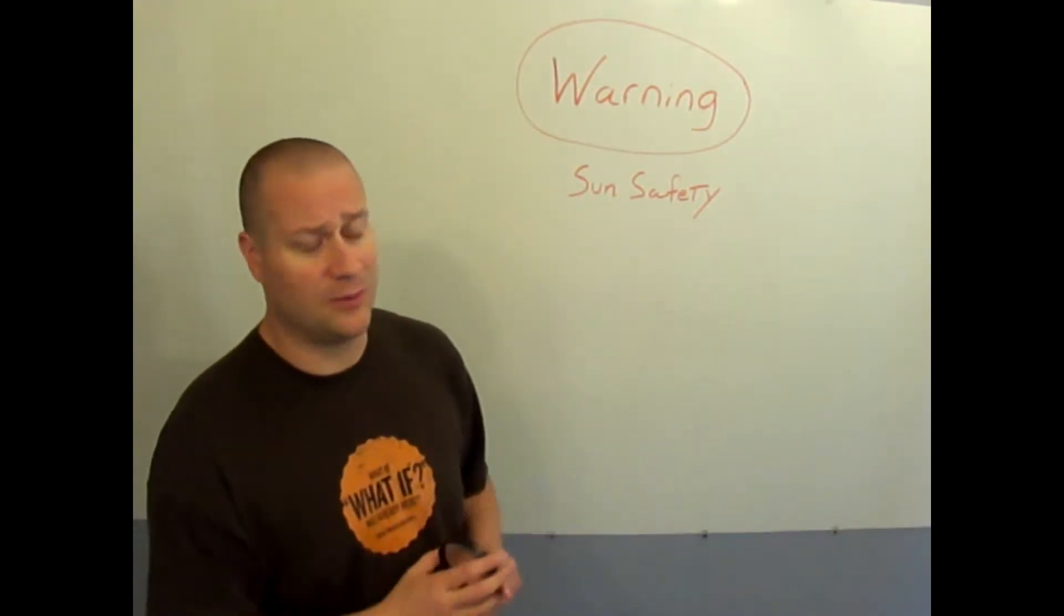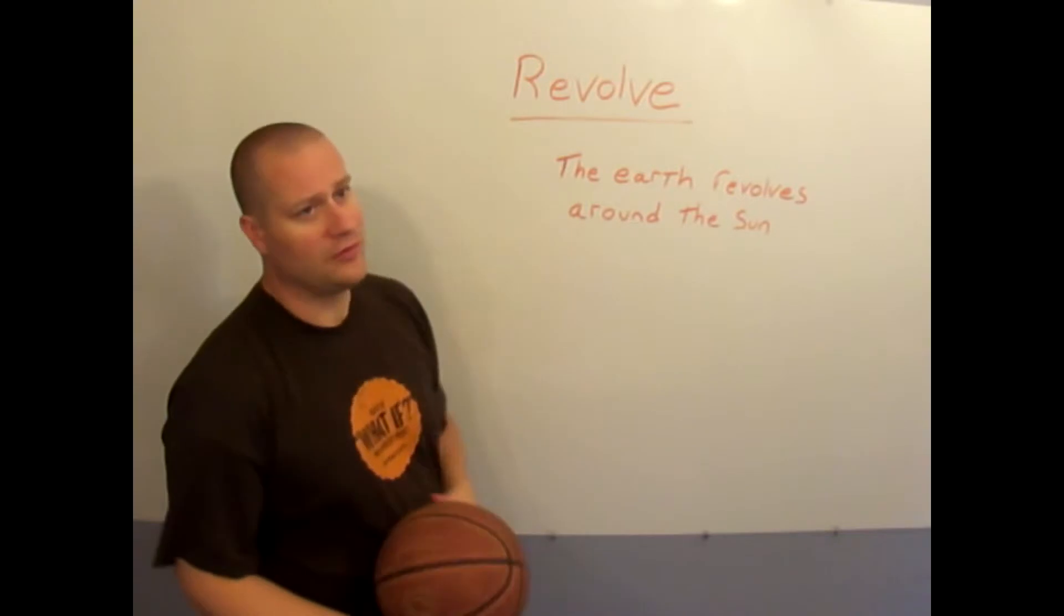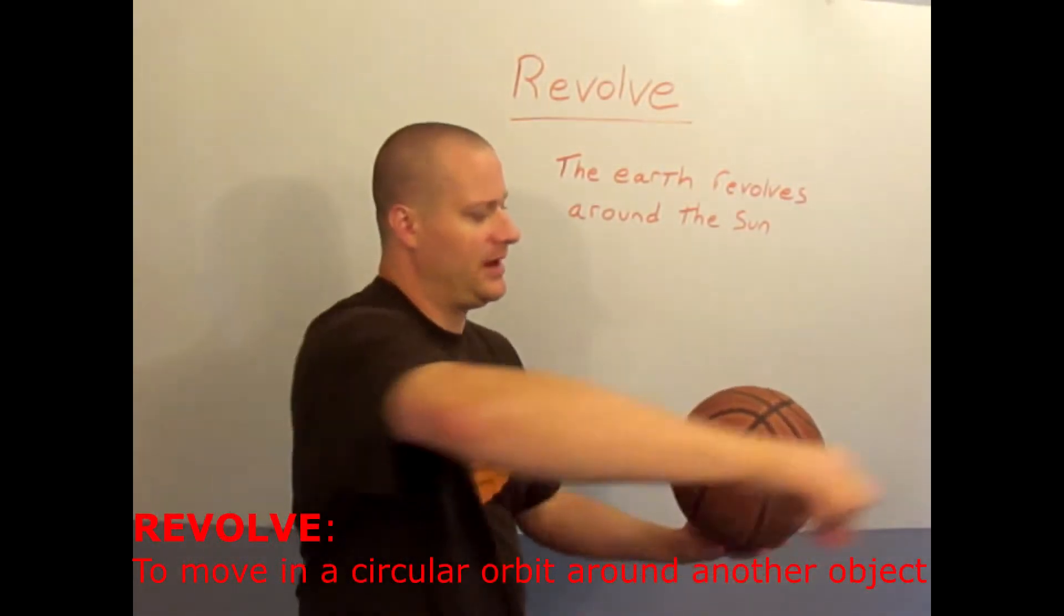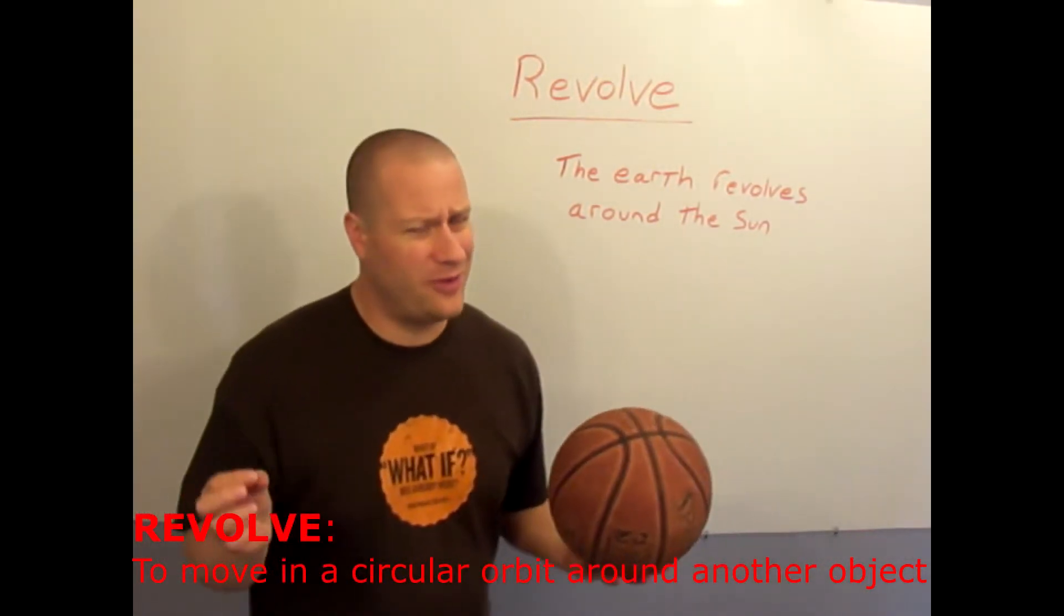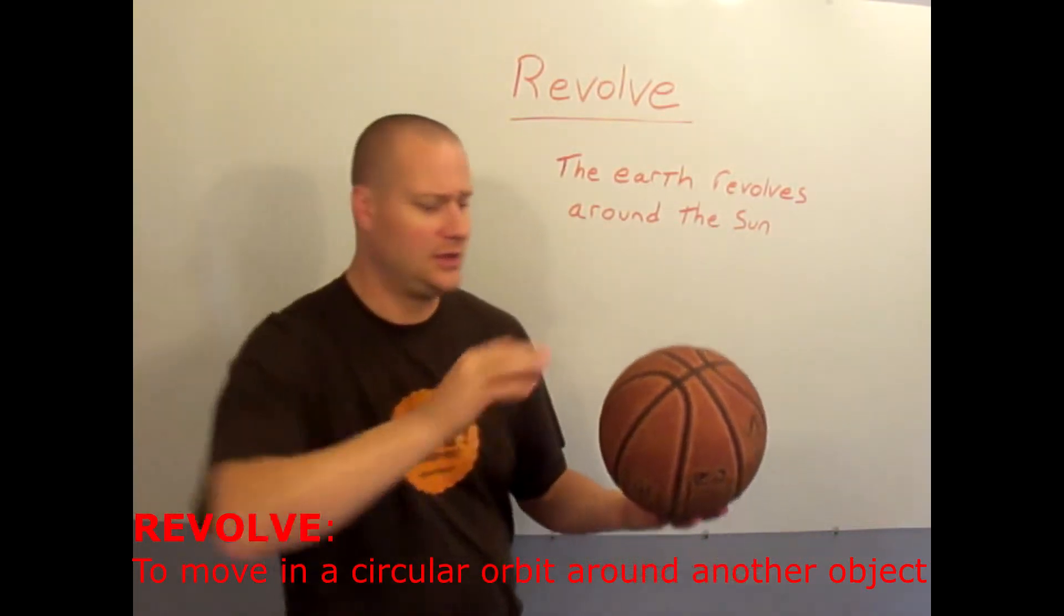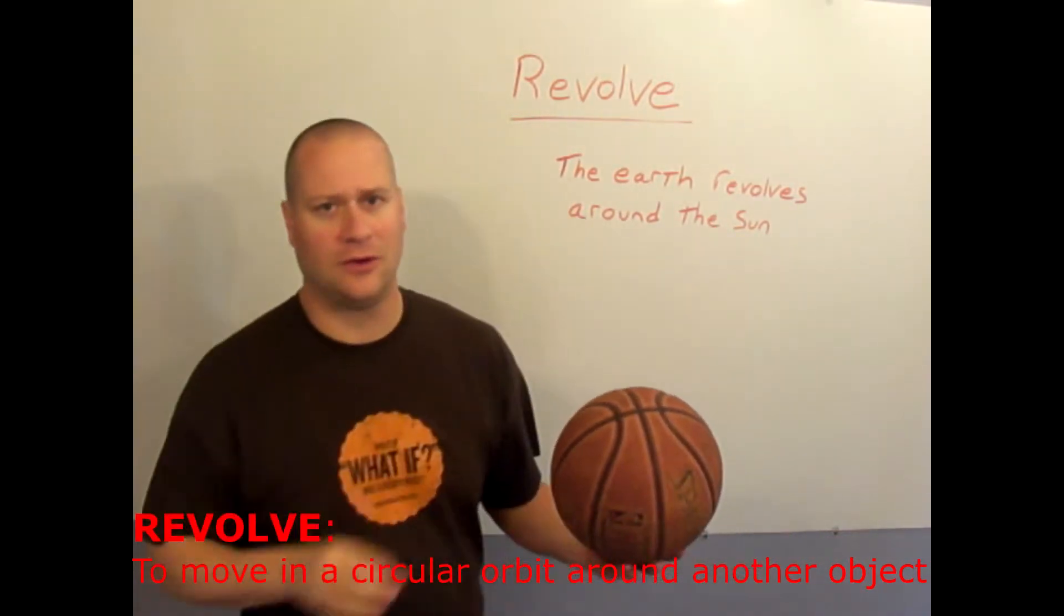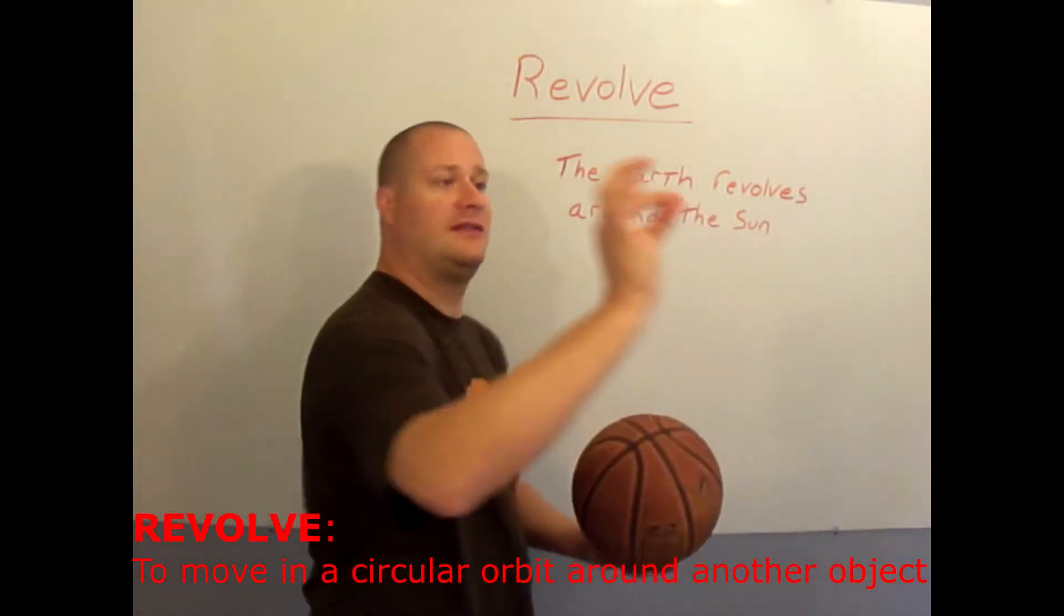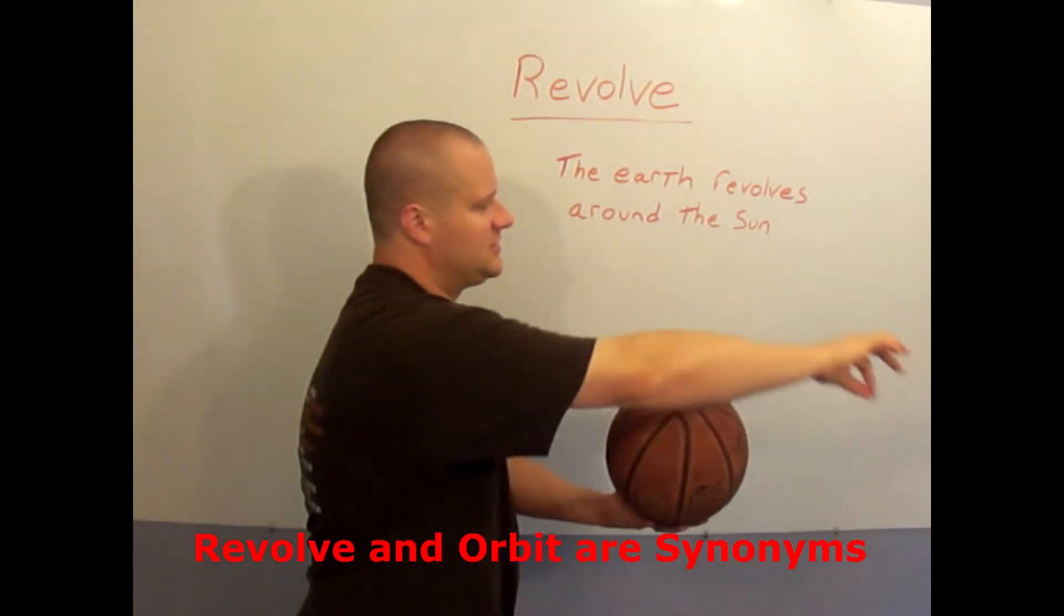New definition for us: revolve. It's almost the same as orbit where one object goes around another. The difference between revolve and orbit is that orbit technically has to do with the gravitational pull and how this one thing pulls on the other and maybe makes a circular or elliptical path. But revolve just simply means that this little peppercorn Earth goes around this big huge Sun.